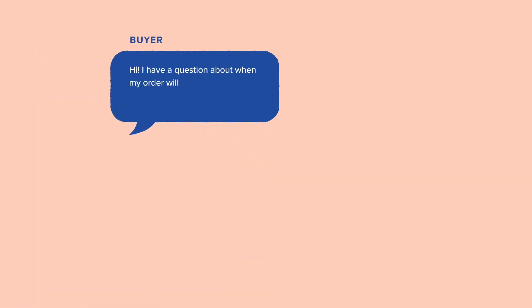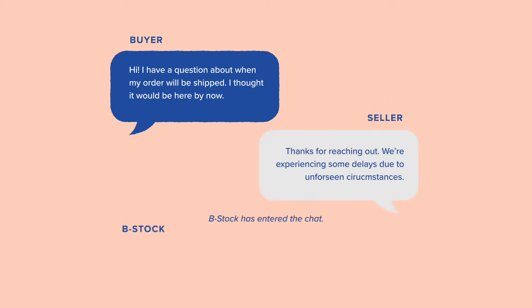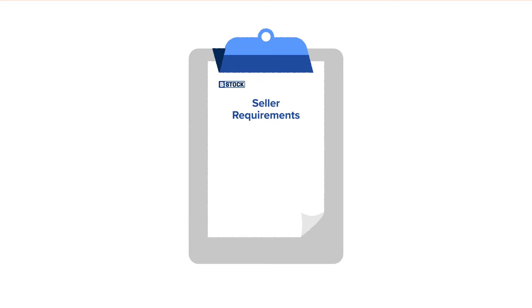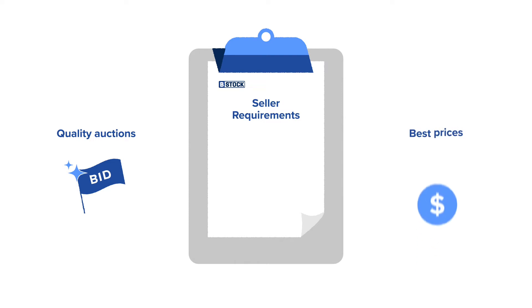B-Stock is a managed marketplace. This means that not only do we bring sellers and buyers together, but we're also involved in their interactions. In order to make sure the marketplace stays healthy, we have certain requirements that our sellers must uphold. These requirements ensure quality auctions for buyers and the best prices for sellers.